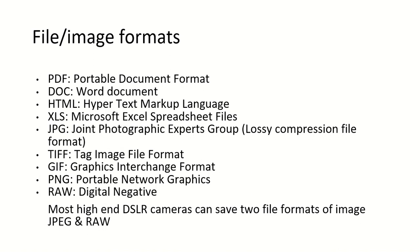The different file or image formats are: PDF (Portable Document Format), Doc (Word Document), HTML (Hypertext Markup Language), XLS (Microsoft Excel Spreadsheet files), JPEG (Joint Photographic Expert Group), TIFF (Tag Image File Format), GIF (Graphic Interchange Format), PNG (Portable Network Graphics), and RAW (Digital Negative). Most high-end DSLR cameras save files in two formats: JPEG and RAW.